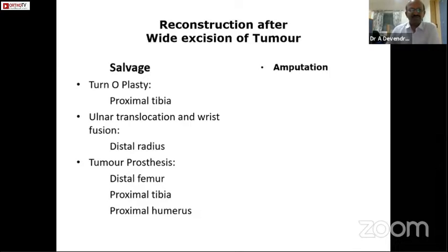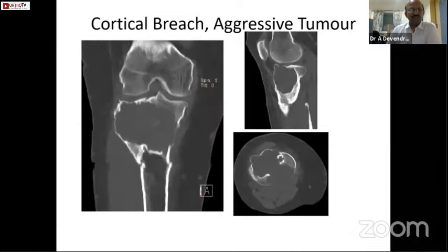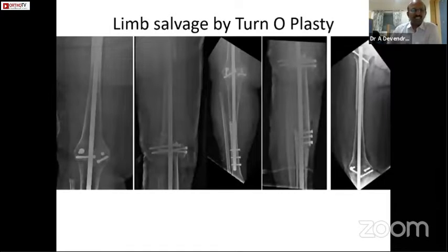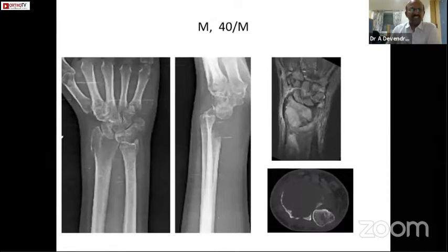Here is a 33-year-old gentleman with an extensive osteolytic lesion proven by biopsy as Giant Cell Tumor. The CT scan shows very limited bone stock, expansion, and thinned-out cortices. In this situation we performed a turnoplasty — the proximal tibia lesion was completely removed by en-bloc resection, followed by turnoplasty and nail arthrodesis. This was done five years ago and there are no signs of recurrence so far.